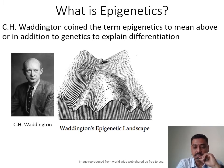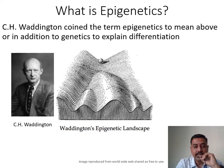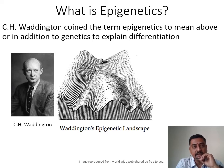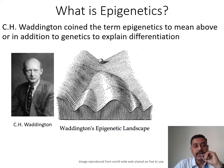The marbles invariably come to rest after choosing one of the grooves or indentations. This is analogous to how a cell begins as a stem cell and, when it starts to differentiate, commits itself to a particular lineage. Finally, after the differentiation process is initiated, it arrives at a terminally differentiated cell type.